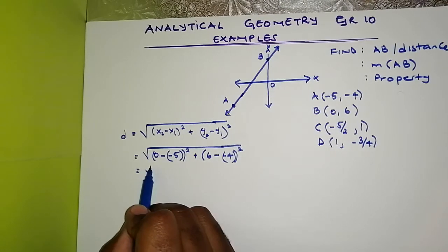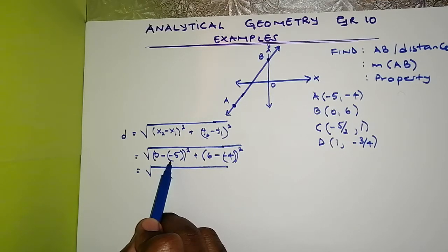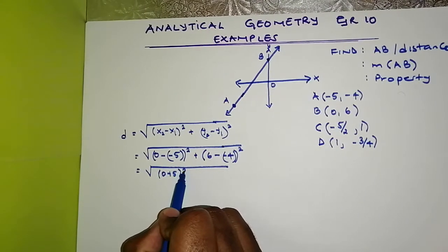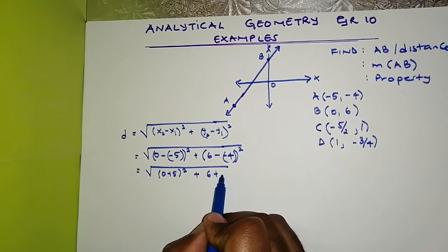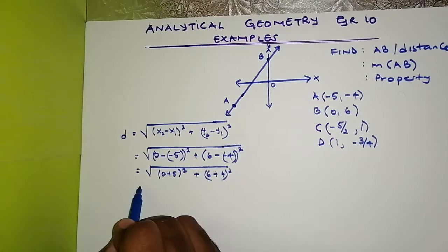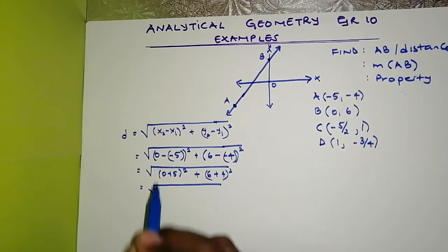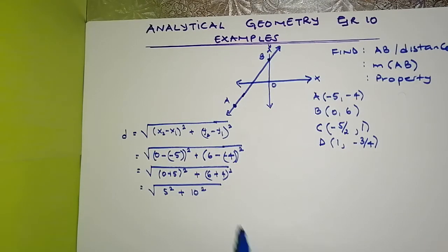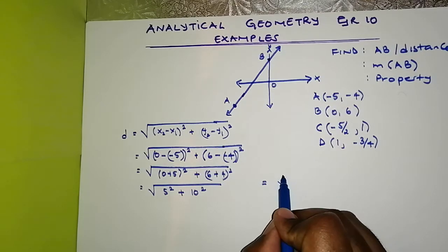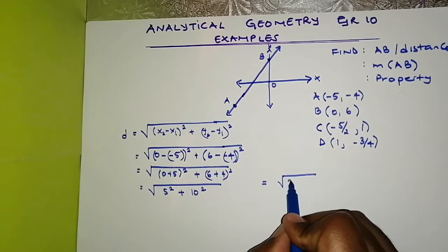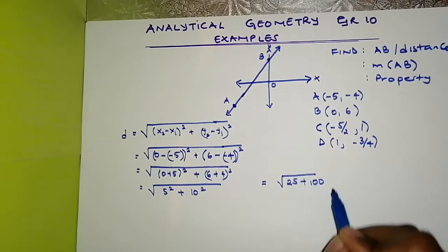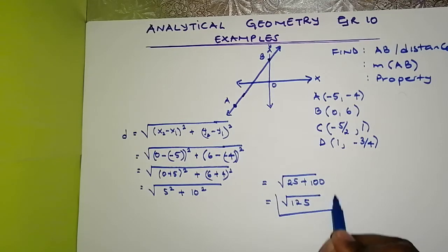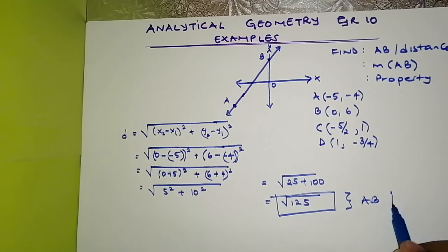A negative multiplied by a negative gives a positive. So this becomes 0 plus 5 all squared, plus 6 plus 4 all squared. That's 5 squared plus 10 squared. 5 squared is 25, plus 10 squared is 100, so this is the square root of 125. This is our distance AB.